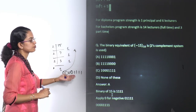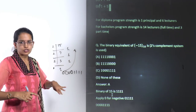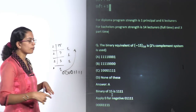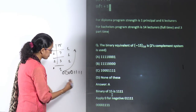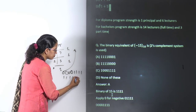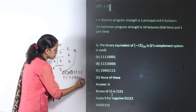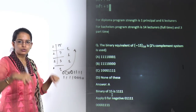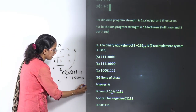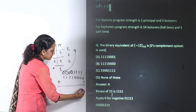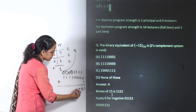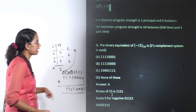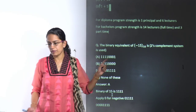Before finding the 2's complement, find the 1's complement by inverting each digit — 00001111 becomes 11110000. Then to find the 2's complement, add 1 to it, giving 11110001 as the final answer. That is the 2's complement result.